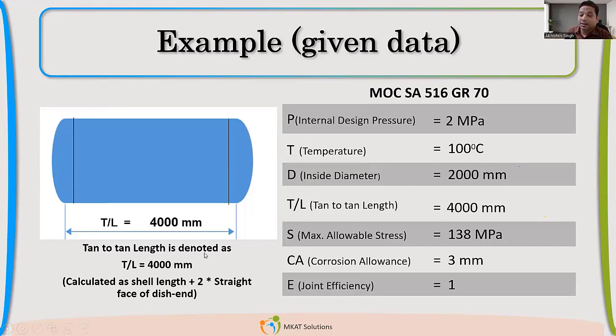Tan to tan length. I hope you know what is tan to tan length. It is a straight length, including that skirt part of the dished end. So this is the straight portion of the dished end. It's called skirt. So in tan to tan length, we include the skirt part of dished end also. What should be the minimum height of the skirt? Because once you are inputting these values, now you see that it is taking part in that length.